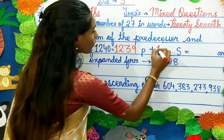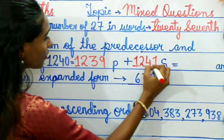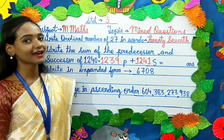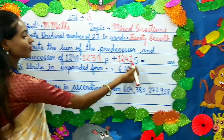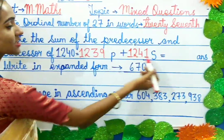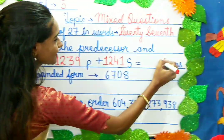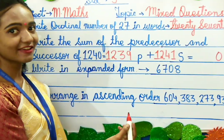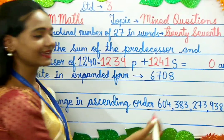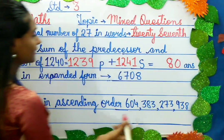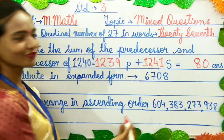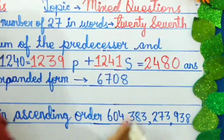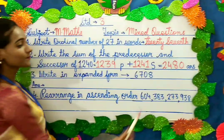Then we have to write the successor — the number after the given number — so after 1240 will be 1241. Now we need to add both the predecessor and the successor. From the ones place: 9 plus 1 is 10, write zero and carry over 1. Then 3 plus 4 plus 1 carry is 8. Next, 2 plus 2 is 4, and 1 plus 1 is 2. So the answer of the successor and predecessor will be 2480.